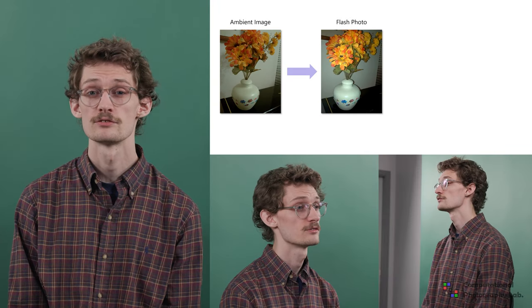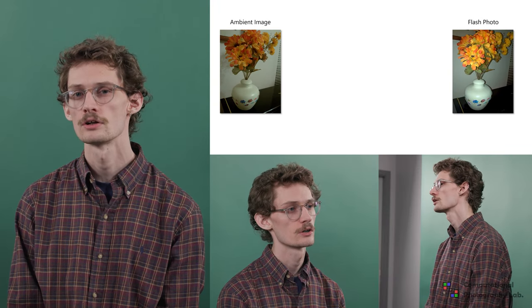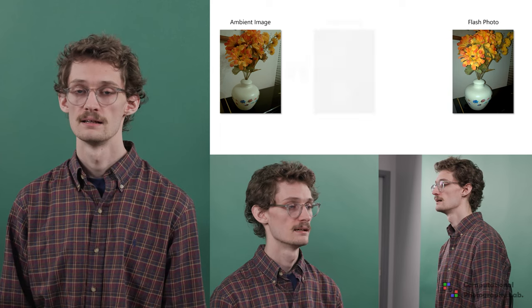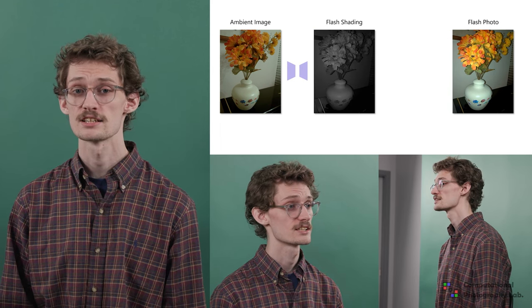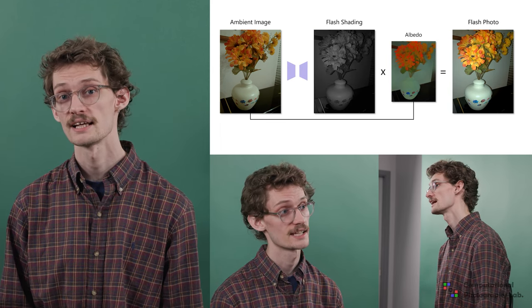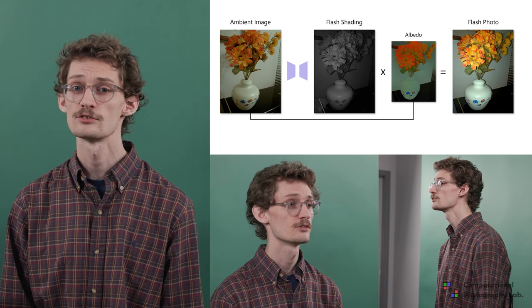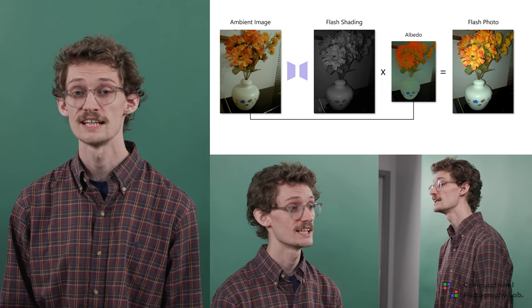In addition to editing an existing flash photograph, it's also useful to add flash to an image captured without it. Using this motivation, we also propose a method for flash generation using our intrinsic image formulation. Similar to the decomposition task, we formulate the flash generation task as predicting a grayscale flash shading component given an ambient image.